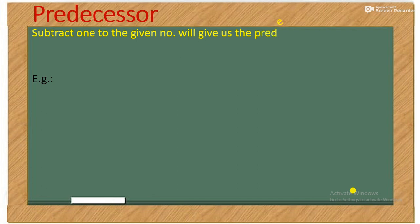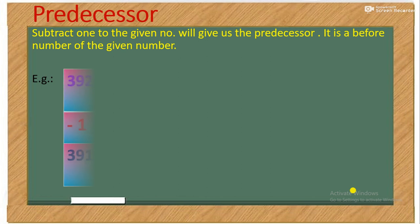Subtract one to the given number will give us the predecessor. Example: 3920